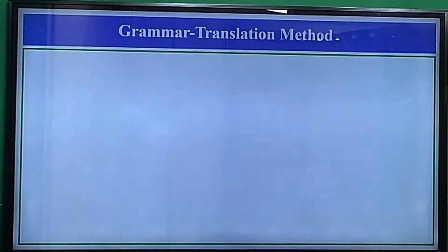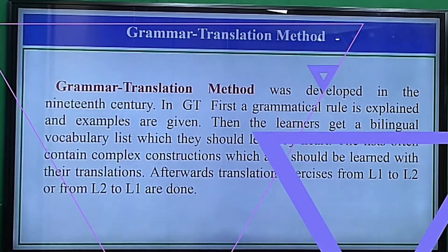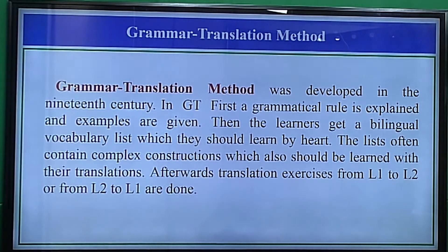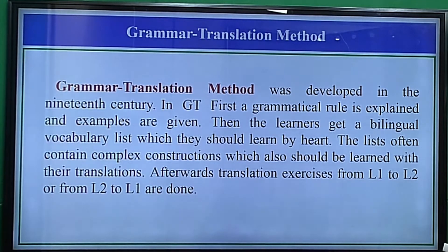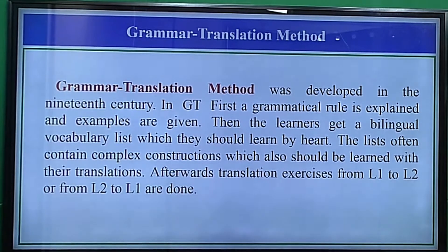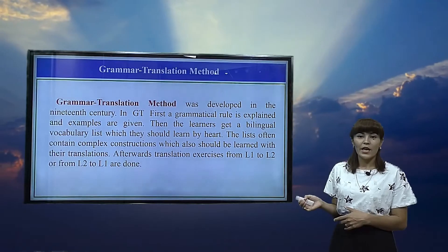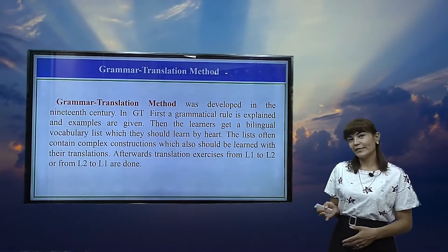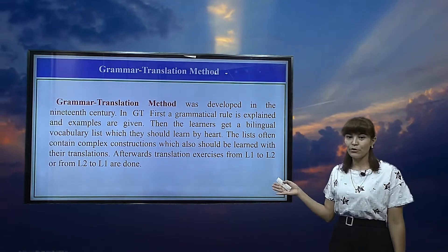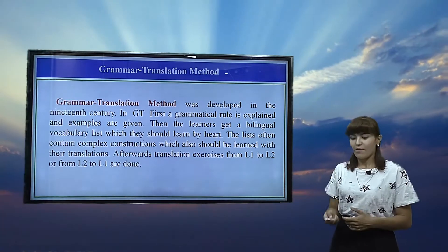The grammar translation method was developed in the 19th century. In this method, a grammatical rule is explained and then examples are given. The learners get a bilingual vocabulary list which they should learn by heart. The lists often contain complex constructions which also should be learned with the translations. Afterwards, translation exercises from language one to language two or vice versa are done.